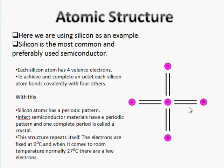The electrons are fixed at zero degrees Celsius. However, at room temperature, normally 27 degrees Celsius, a little amount of energy is made available, and a few electrons can leave these bonds.